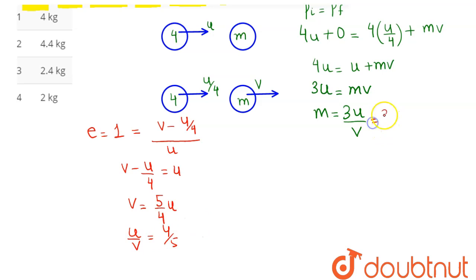Now substituting here, this comes out as 4 by 5, so the mass comes as 12 by 5 kg, which is 2.4 kg. 2.4 kg means option number 3 is the correct answer. Hence 3 is our answer.